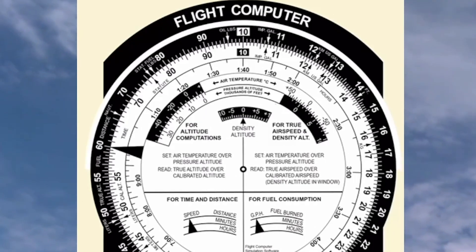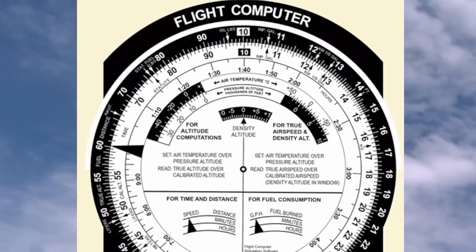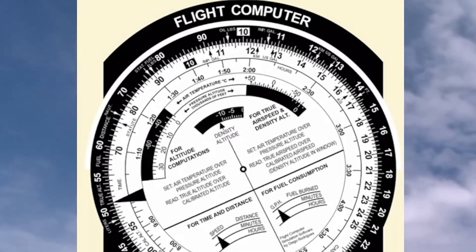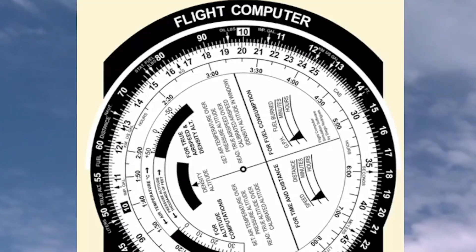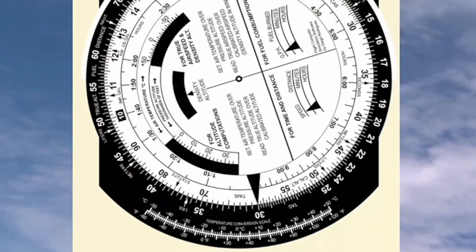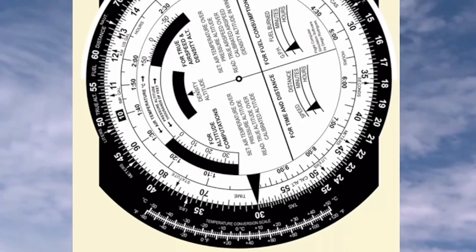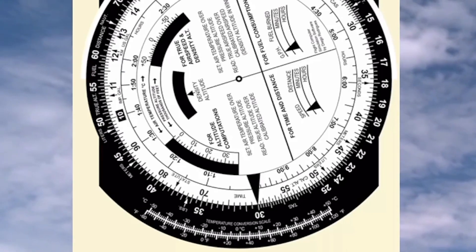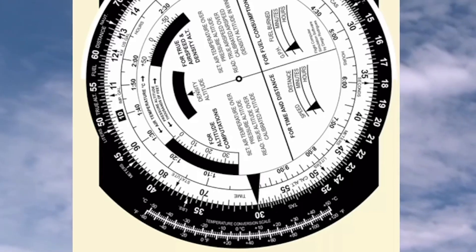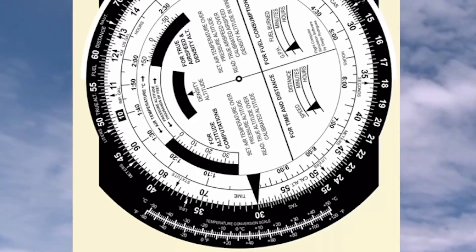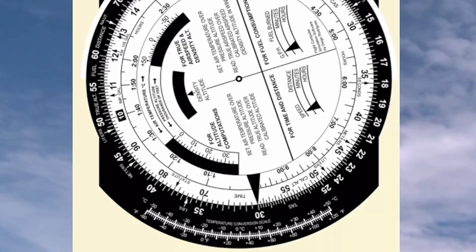Just like a slide rule, if you want to multiply 2 by 4, what you would do is put the index directly over the 2 on the movable C ring. Then you would read on the black ring out to the 4, which is at about the 7 o'clock position — it says 40. Read straight down. Even though the answer says 80, because we're multiplying 2 by 4 using 20 and 40, we realize we have to drop that last zero, and the answer is 8.